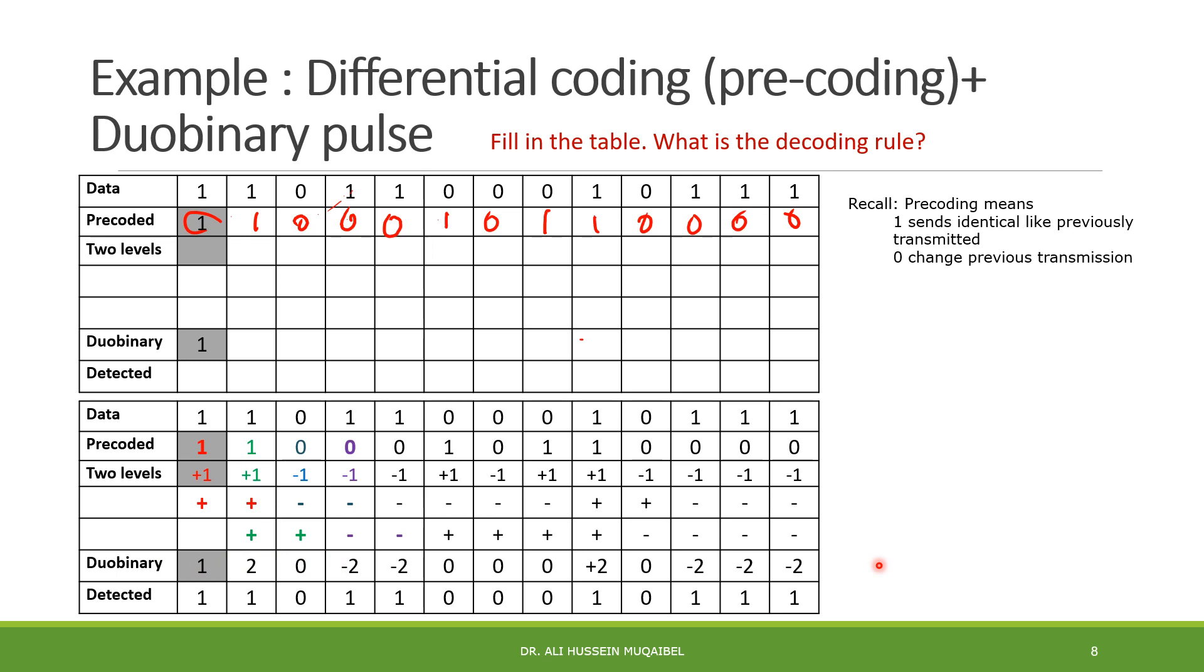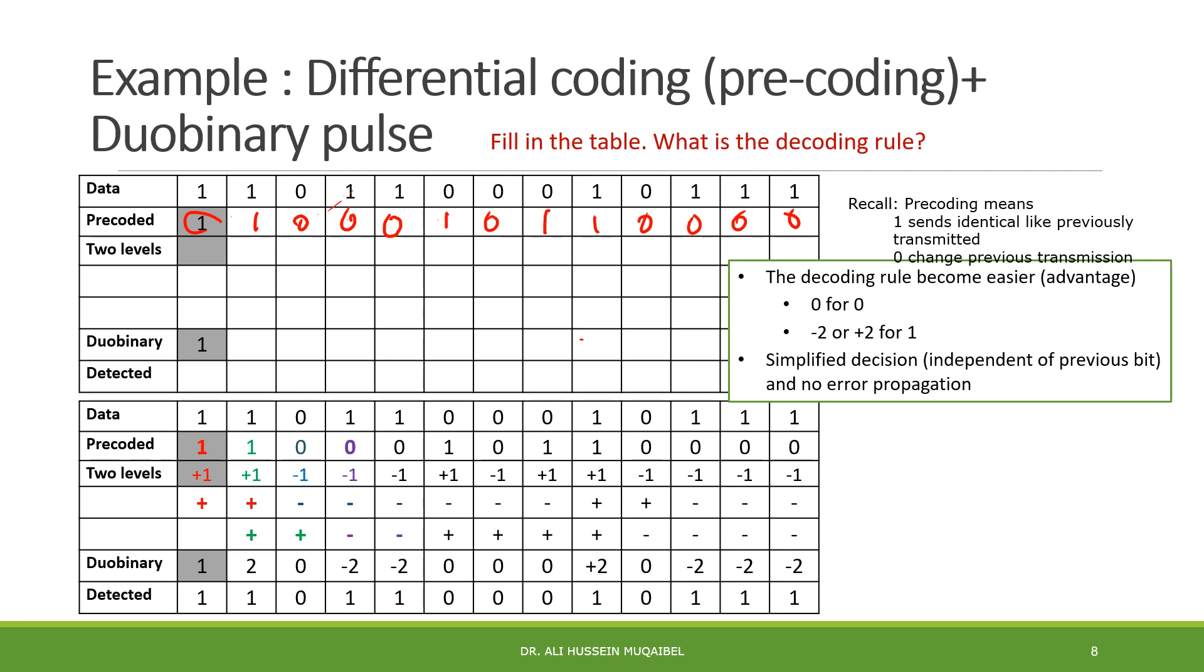Now, I'm asking you, what is the pre-coding? How can you find a relation between this and the previous, and the data itself? The answer is, whenever we have minus two or plus two, the answer is always going to be one. And whenever there is zero, the data is going to be zero. So, the decoding rule is, minus two or plus two give you one, zero give you zero. There is no dependence on the previous data. So, the decoding rule is becoming easier. It's an advantage, zero give you zero, minus two or plus two give you one. What we have done with pre-coding, this is duobinary plus pre-coding plus duobinary. We have made the decoding easier. We have avoided the problem of error propagation, of course, at the cost of required pre-coding at the transmitter.